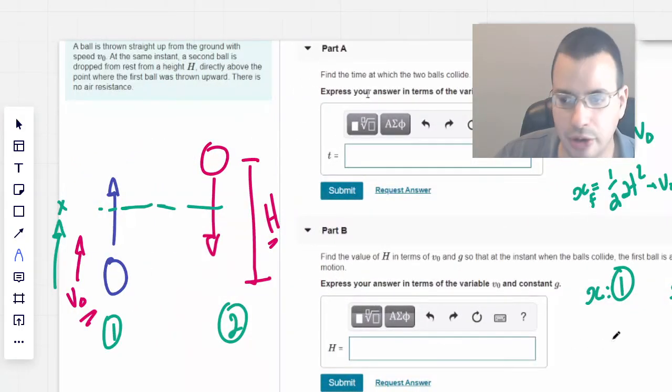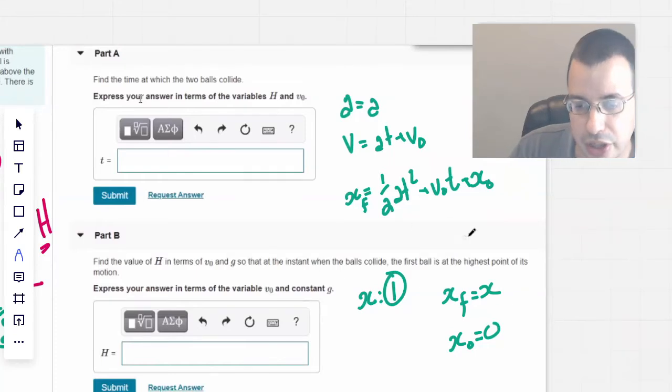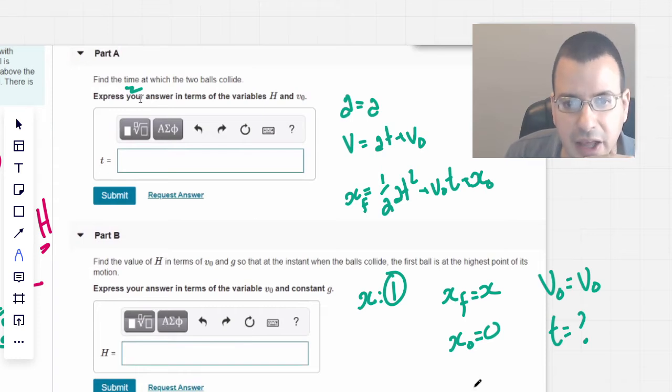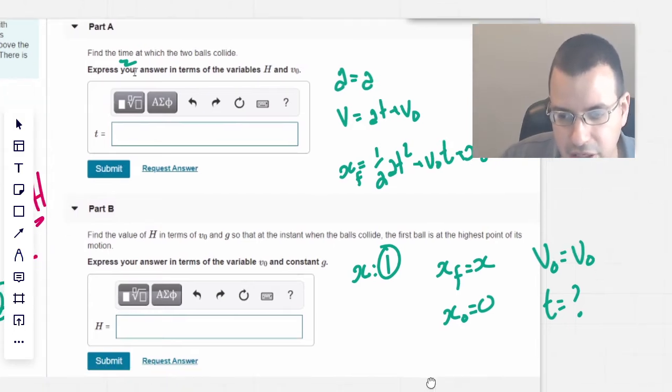Because it's thrown straight up from the ground. The initial velocity is going to be just V0. The time is just going to be question mark. We don't know what that is. That's what we're trying to find. And it looks like acceleration, velocity, V0. Yep, looks like we have everything. So we can rewrite this for ball number one.